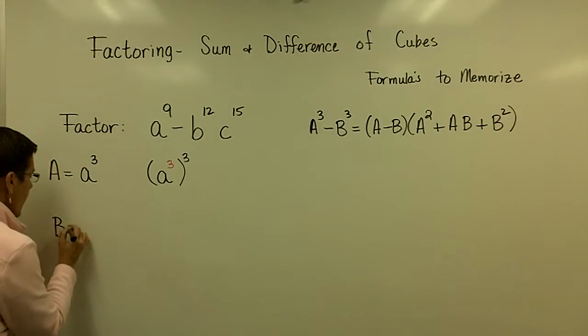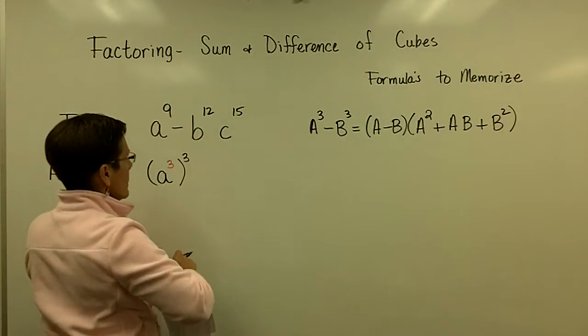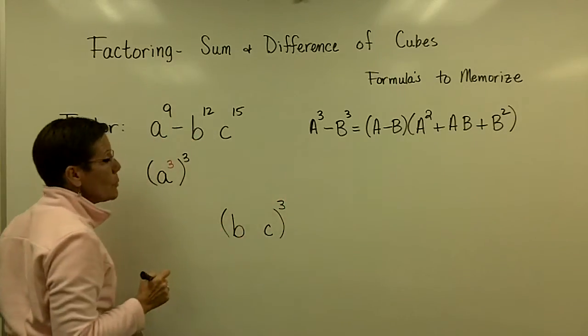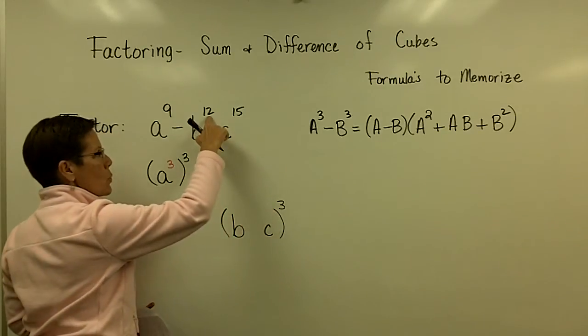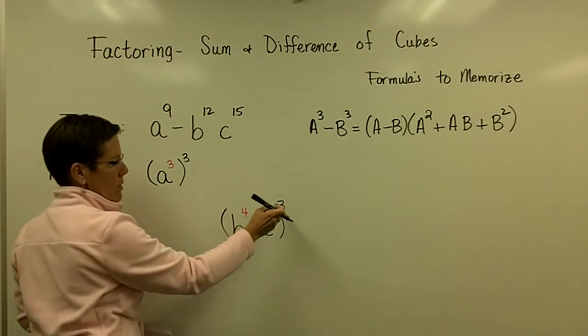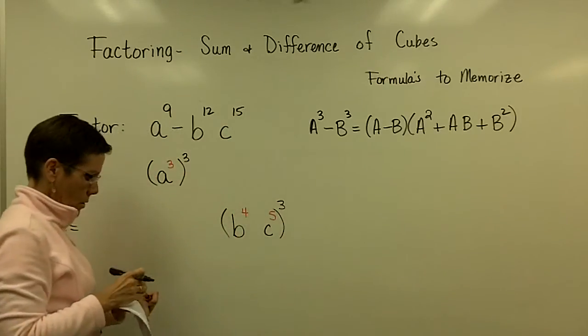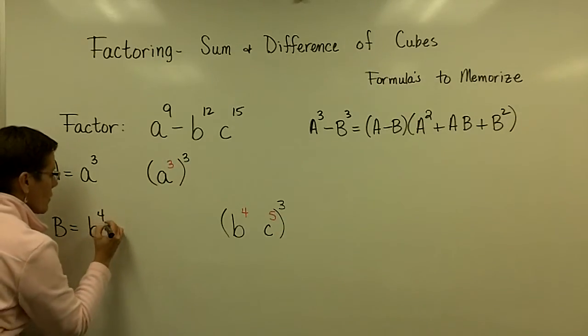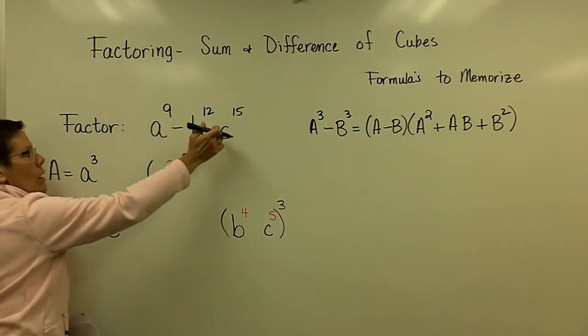I'm looking for my capital B value next. B and C have to be raised to some power, and when I cube them, I got to get a 12 and a 15. I need a 4 here because 4 times 3 is 12. And I need a 5 here because 5 times 3 is 15. So my capital B value is B to the fourth, C to the fifth. Because when I cube that, I get B to the twelfth and C to the fifteenth.